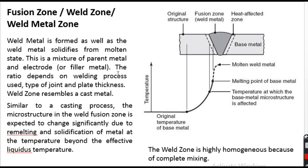The type of the welding process, the type of joint, and the thickness of the plate — these three things dictate the composition of the weld zone. Similar to a casting process, the microstructure in the fusion zone is expected to change significantly and is completely different from that of the base metal because the base metal has completely melted and then solidified when the heat source moved ahead. The fusion zone is exposed to a temperature well beyond the liquidus temperature — the temperature beyond which the specimen is completely molten.